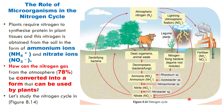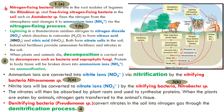First, we have nitrogen-fixing bacteria. One type is found in the root nodules of legumes — that's the Rhizobium species. Another type is free-living nitrogen-fixing bacteria found in the soil, and that's the Azotobacter species.